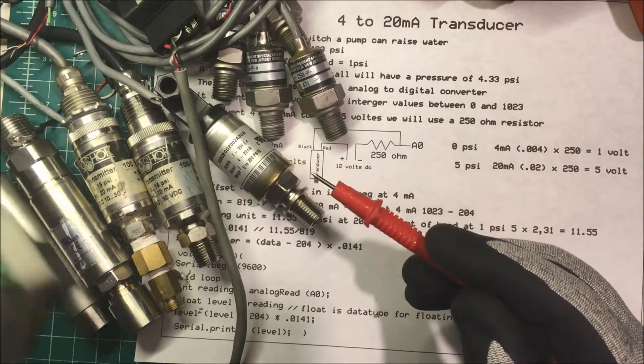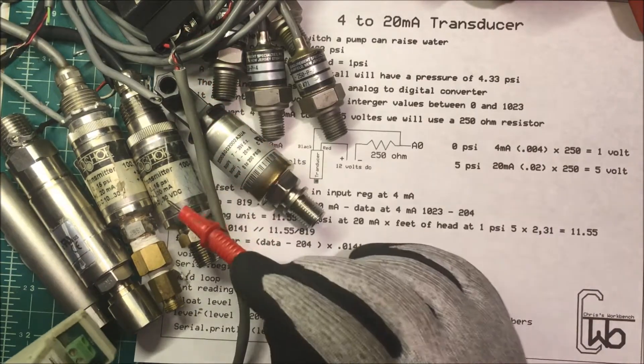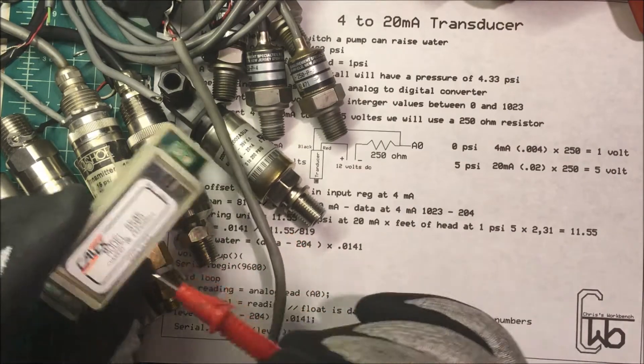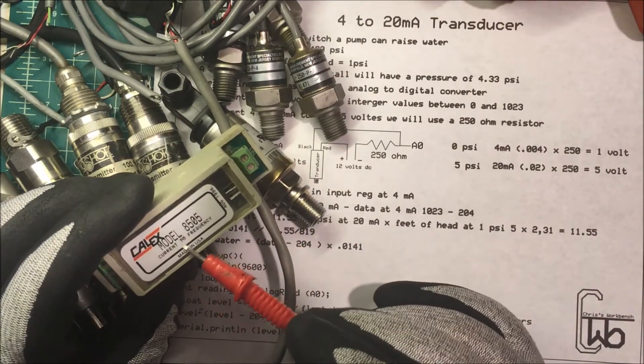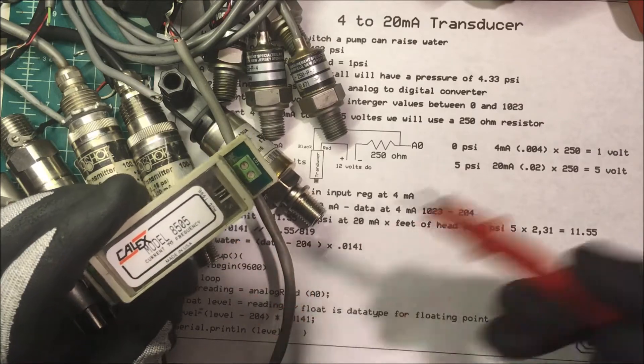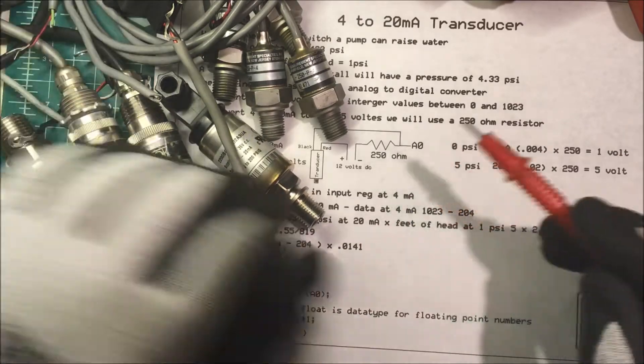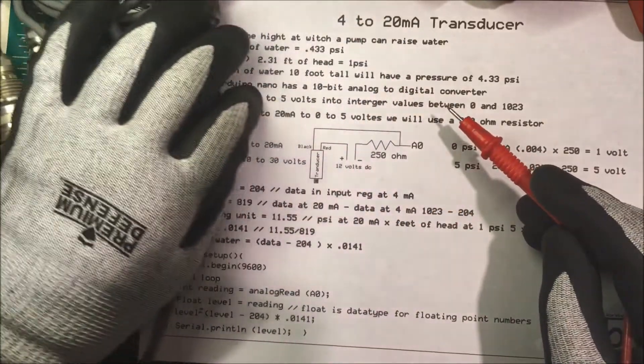If we didn't have one of these units and we just had a 4 to 20 milliamps, you could use a unit like this which takes the current and converts that to a frequency. We'd count the frequency and calculate the amount of pressure we have.